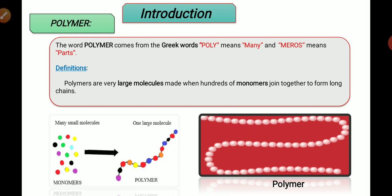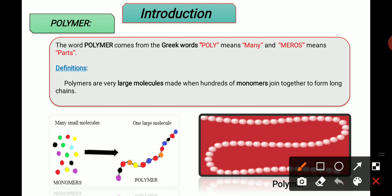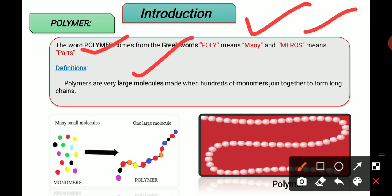Introduction of polymer: the word 'polymer' comes from the Greek word — 'poly' means many and 'mers' means parts. The definition of polymer is: polymers are very large molecules made when hundreds of monomers are joined together to form a long chain. Just look at the figure so you can easily understand.